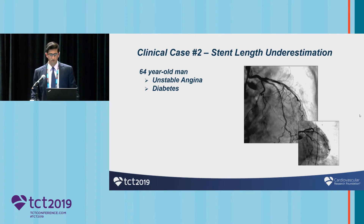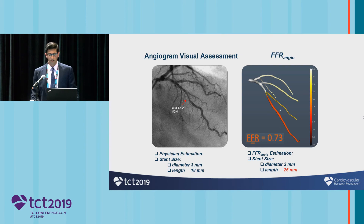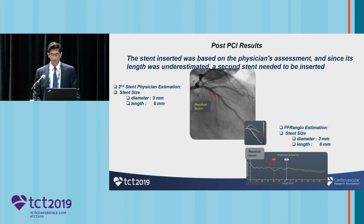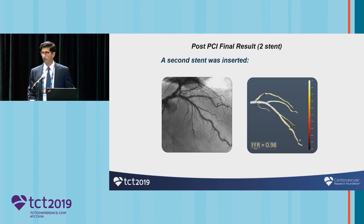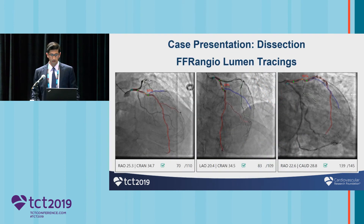This is a case of stent length underestimation: a 64-year-old with angina and diabetes. The physician estimate was a diameter of 3mm and length of 18mm. Based on the FFR angio system, the diameter was correct but the length was much longer at 26mm. A shorter stent was placed based on physician assessment, and a second stent was needed to cover the distal lesion. The pullback showed a residual lesion with a clear drop in FFR, so a second stent was placed with resolution of FFR to 0.98 — an improvement in workflow and clinical outcomes.